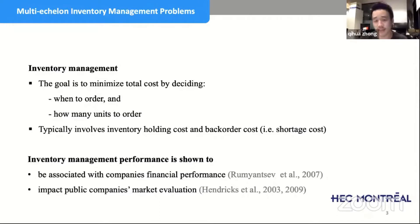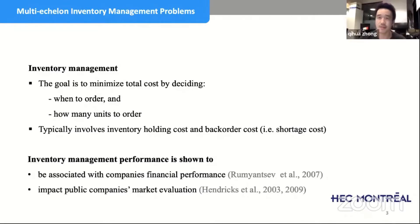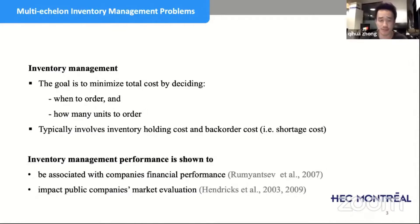On the other side we have the backorder cost — the cost when we don't have something. That would be an implicit cost because we don't have inventory to sell, so we lose the opportunity to make money, or because customers are not happy. Those are the two typical costs we want to balance by deciding ordering quantities.